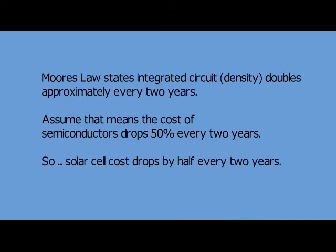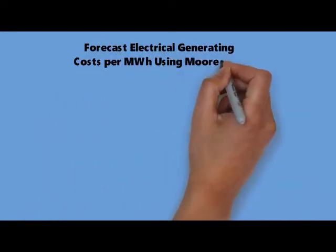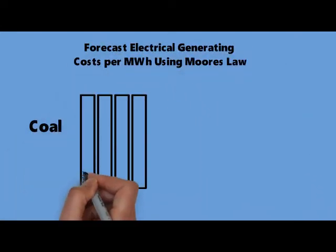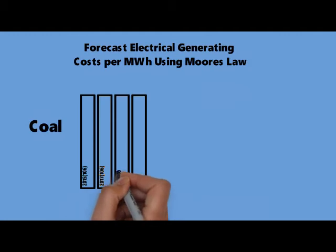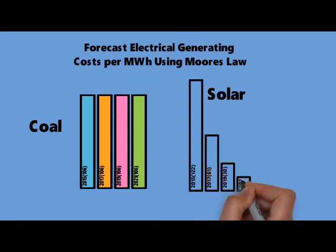So I said, well, then solar cell costs drop by 50% every two years. And I made the tremendous leap that said, well, if that's true, then the cost of generating solar power using semiconductors drops by 50% every two years. So what did I get? Coal is at $106 per megawatt hour as of 2015 roughly, and solar is at $122 per megawatt hour.